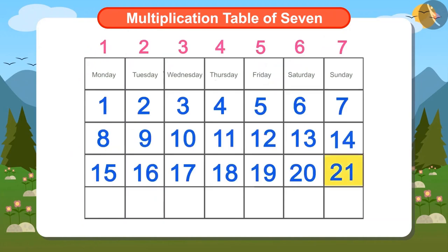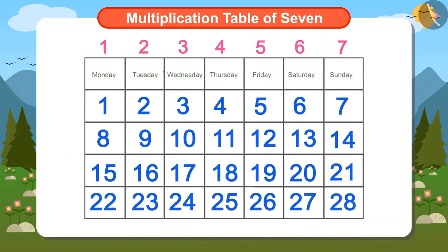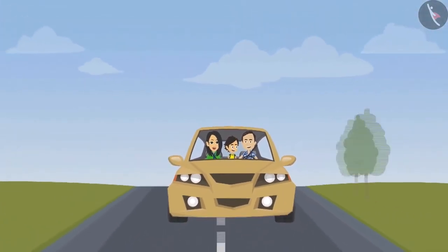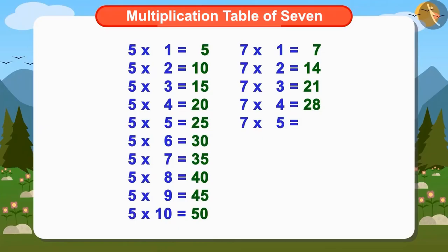Now Ayushman knows that he will be going out on dates 7th, 14th, 21st and 28th of this month. Mummy is also ready! Now Ayushman, papa and mummy are going to go out. But we will write the complete multiplication table of 7 and memorize it. 7 multiplied by 5 would be the same as 5 multiplied by 7, which is 35. The next number, 7 multiplied by 6, is the same as 6 multiplied by 7, which is 42.